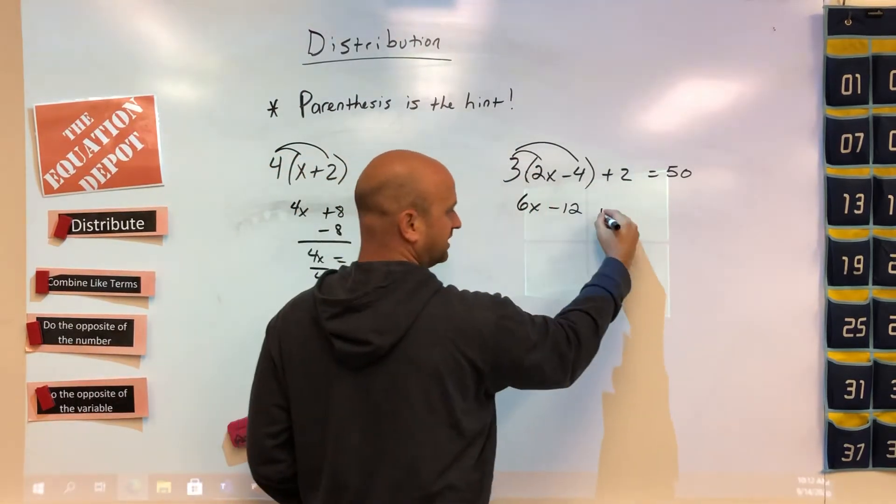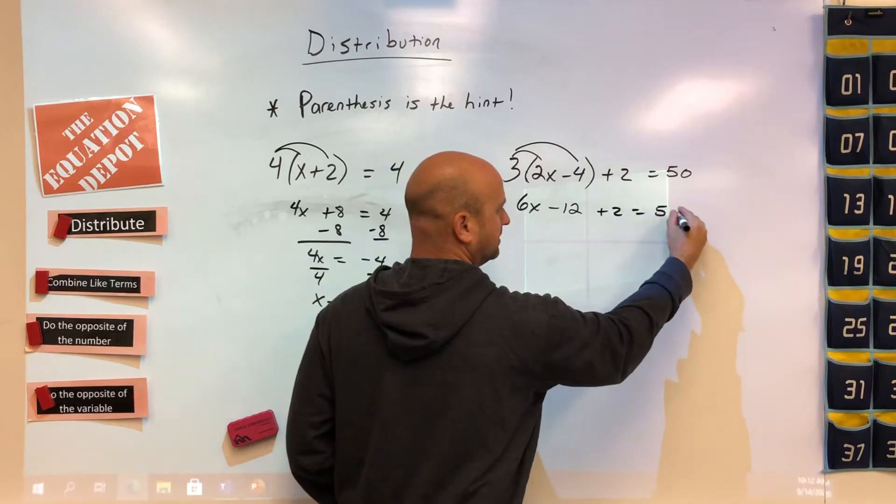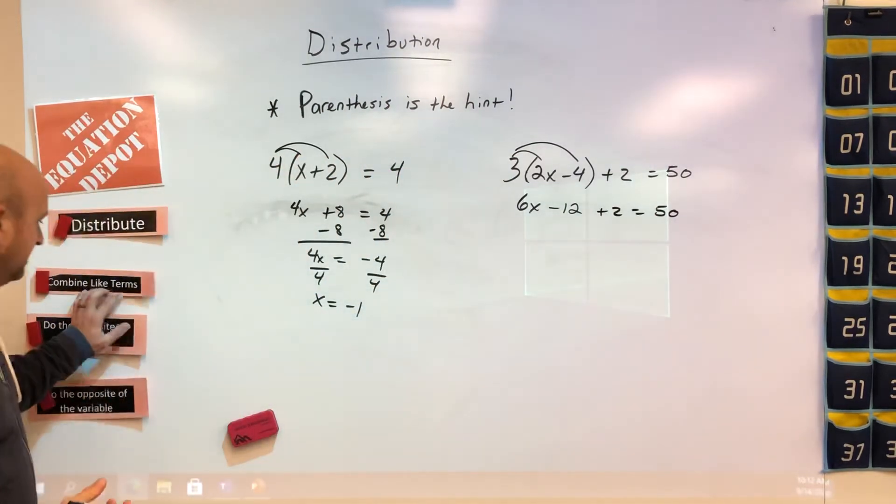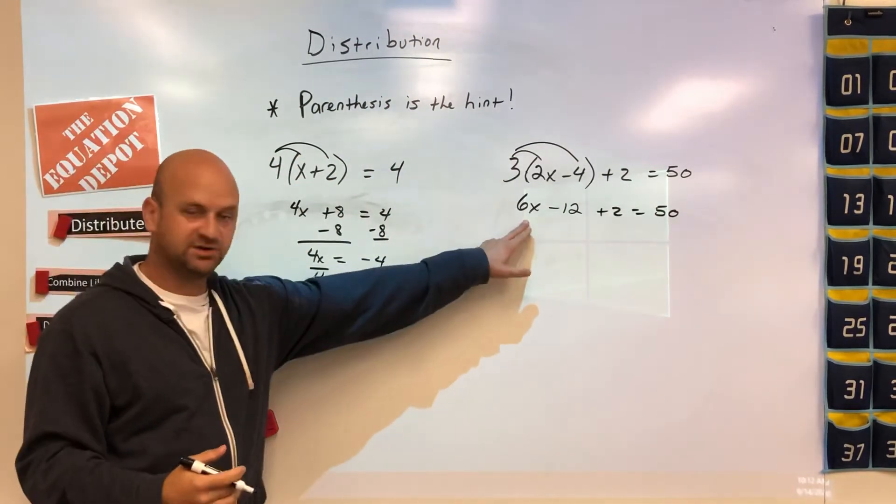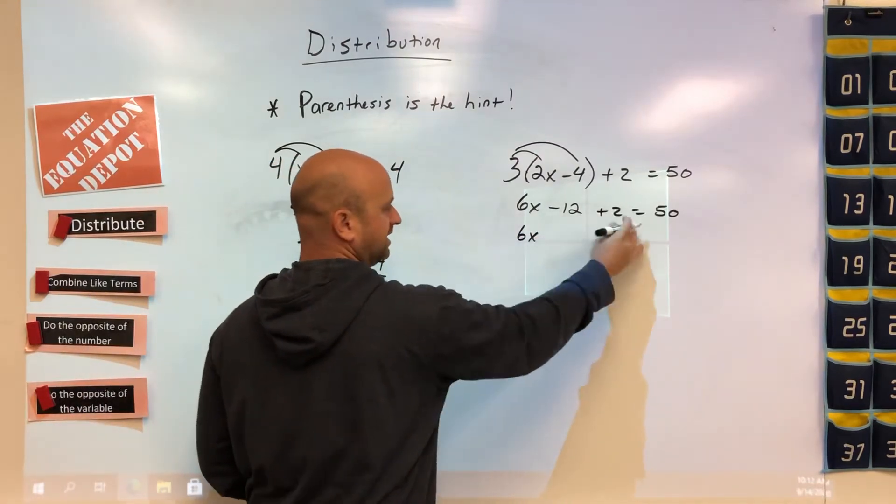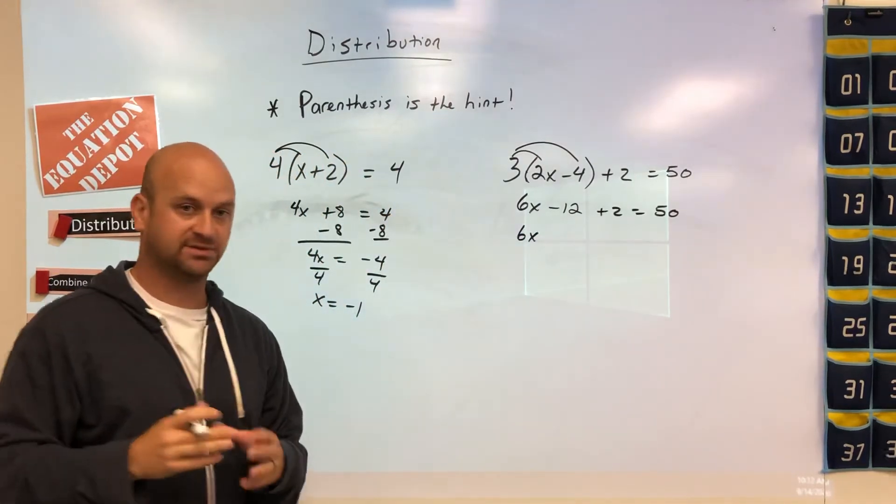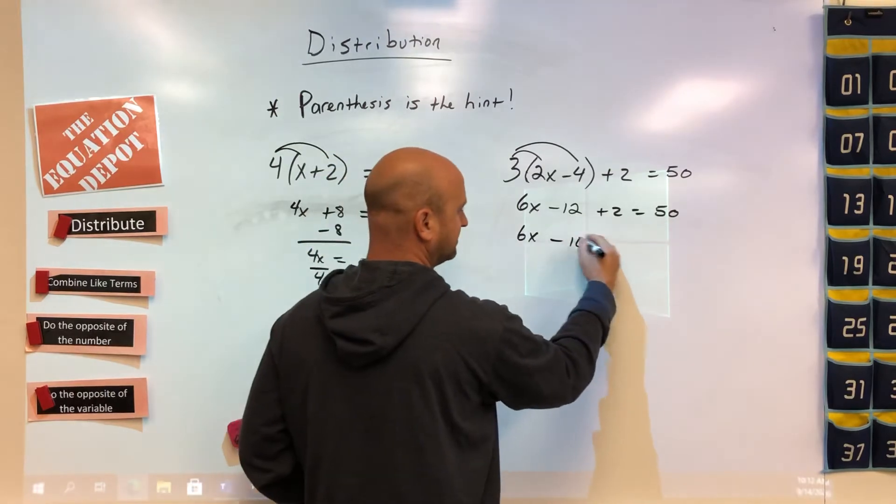The distribution part is done, so now we need to bring everything else down. Now here's where we do combining like terms. We have one variable term so that stays the same, but we have two number terms and we need to combine them. When we do, we get negative 10.